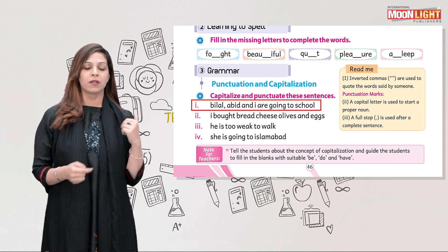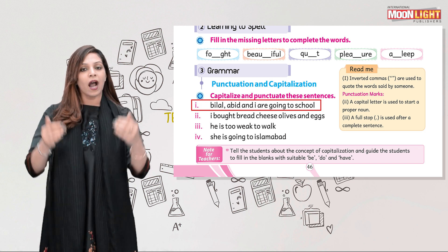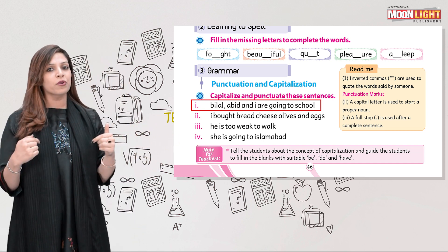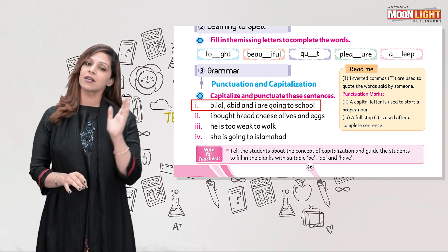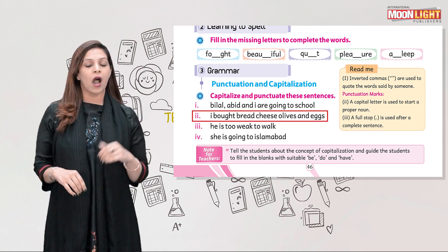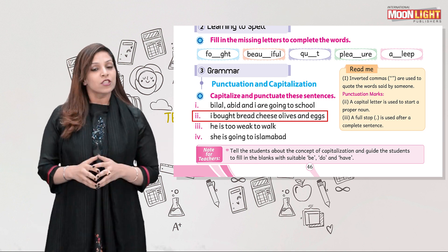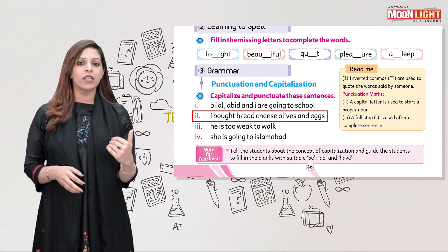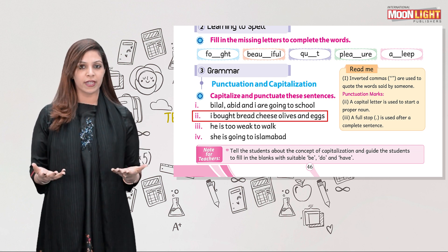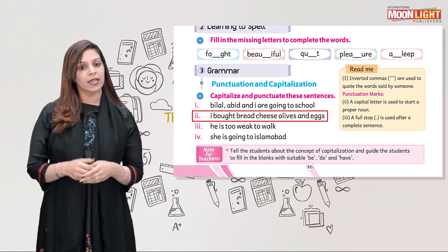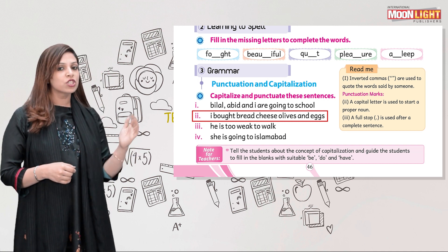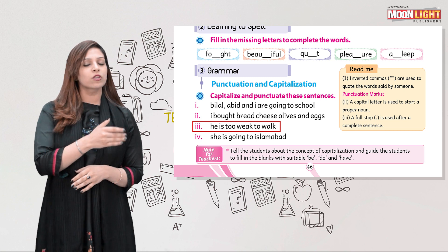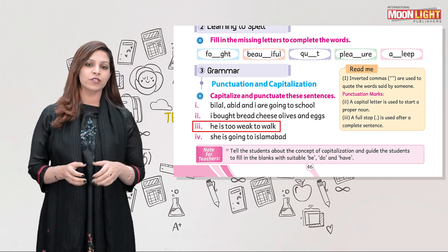First sentence: Bilal, Abit and I are going to school. 'B' in Bilal is capital for two reasons — it starts the sentence and is a proper noun. 'A' in Abit is capital because it is a proper noun. 'I' is always capital. Put a full stop at the end. Second sentence: I bought bread, cheese, olives and eggs. Capitalize 'I', add commas between items, and put a full stop at the end.